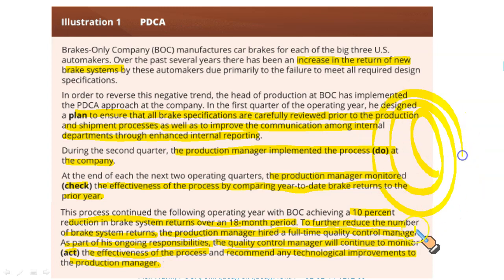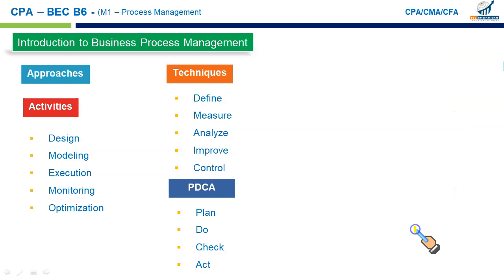To further reduce brake returns, the production manager hired a full-time quality control manager, whose ongoing responsibility is to monitor the effectiveness of the process and recommend any technological improvements. Remember, it's a cyclical process — many iterations and you keep improving every cycle. There are also certain process metrics — financial and non-financial tools — that we can use.